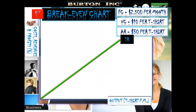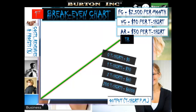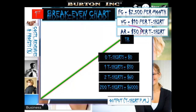Total revenues: if we sell zero, we have zero revenue. If we sell 200 t-shirts, we have $6,000 in revenue.